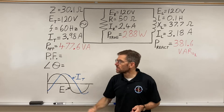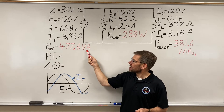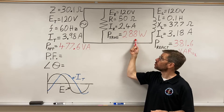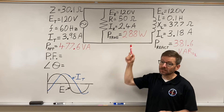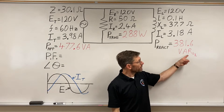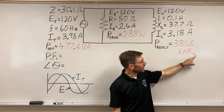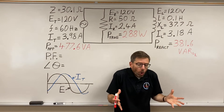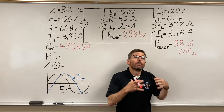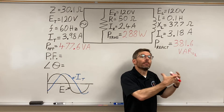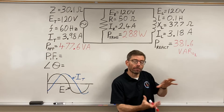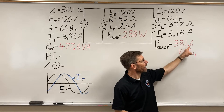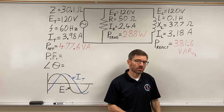We get these numbers: 477.6 volt amps apparent power. True power measured in watts: 288. And volt amps reactive — I put the little L because they're provided by an inductor. As we start to combine components, we'll want to know what power comes from what component. That's 381.6 VARs.